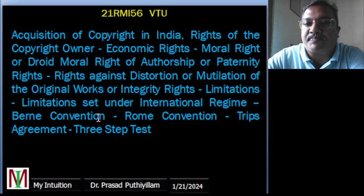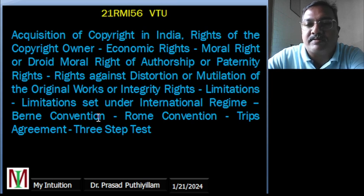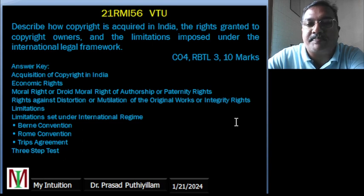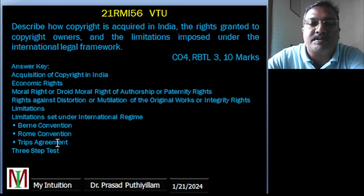The topics I am covering here are: acquisition of copyright in India, rights of the copyright owner, economic rights, moral rights — also known as droit moral — paternity rights, right against distortion or mutilation of the original work (integrity rights), and limitations of copyright. The question framed is: 'Describe how copyright is acquired in India, the rights granted to copyright owners, and the limitations imposed under the international legal framework.' It is mapped to CO4, at taxonomy level 3, and is a 10-mark question.